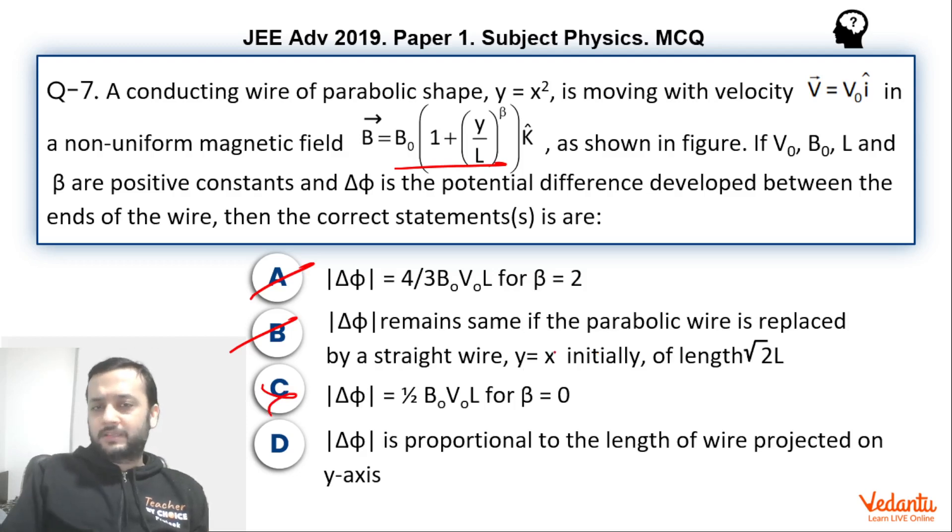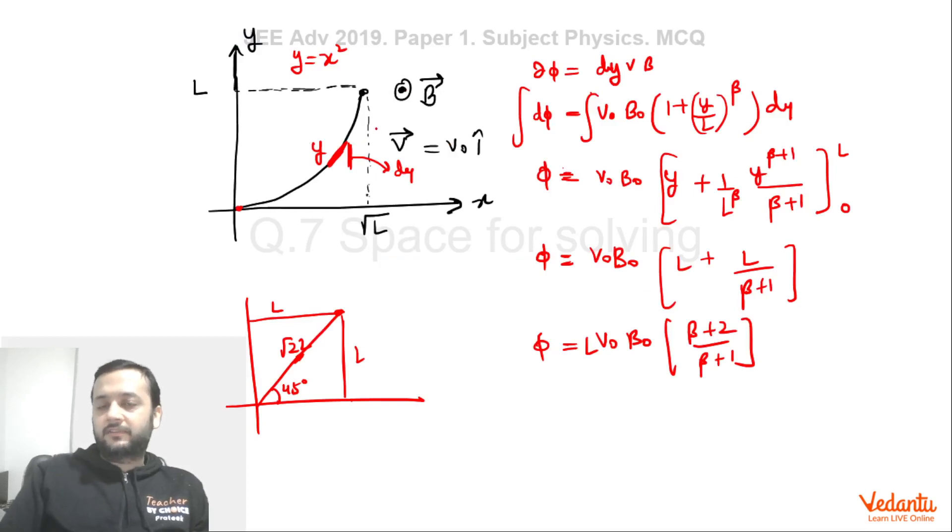β equals 0 by the way was a very simple case. If you put β equals 0 here, so this becomes 1+1, 2. 2B₀ is the magnetic field. And you can see that magnetic field, if it is 2B₀, then anyway you could have replaced this by a straight wire. Like you know, constant magnetic field where you can replace any shape wire by a straight wire from this type.